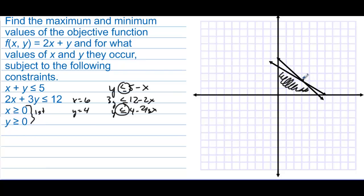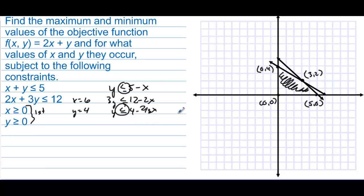Now we identify the vertices of the feasible region. It appears this intersection point is (3, 2). This vertex is (5, 0), we also have (0, 0), and up here we have (0, 4). Those are the four vertices where the minimum and maximum can occur on this feasible region for f(x, y) = 2x + y.